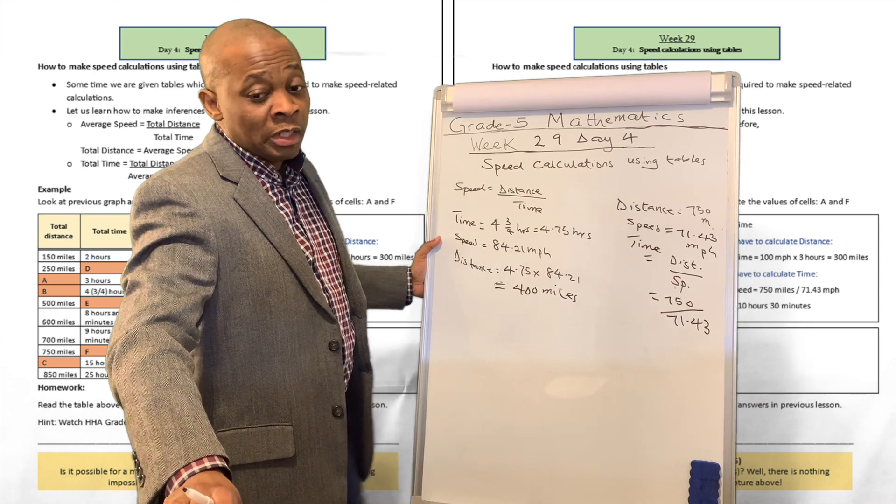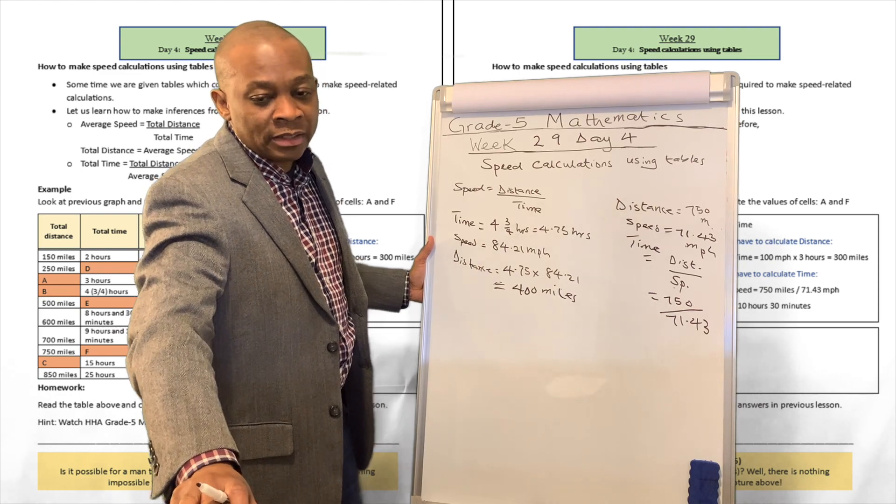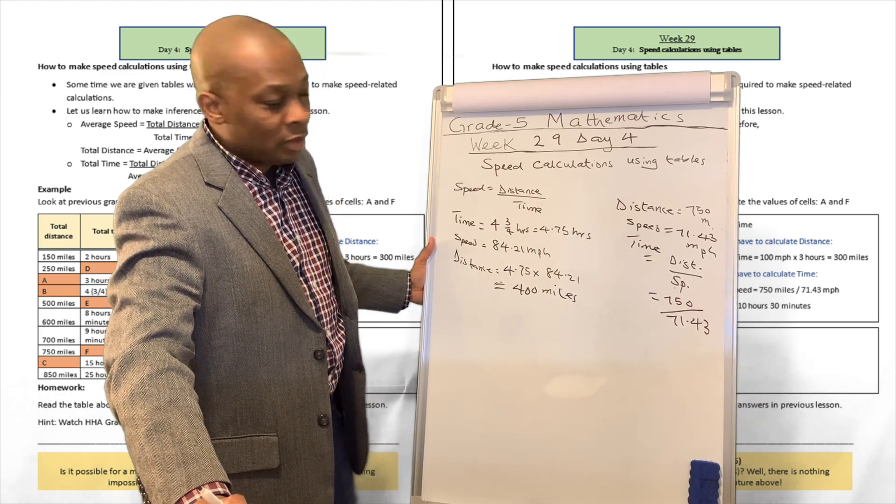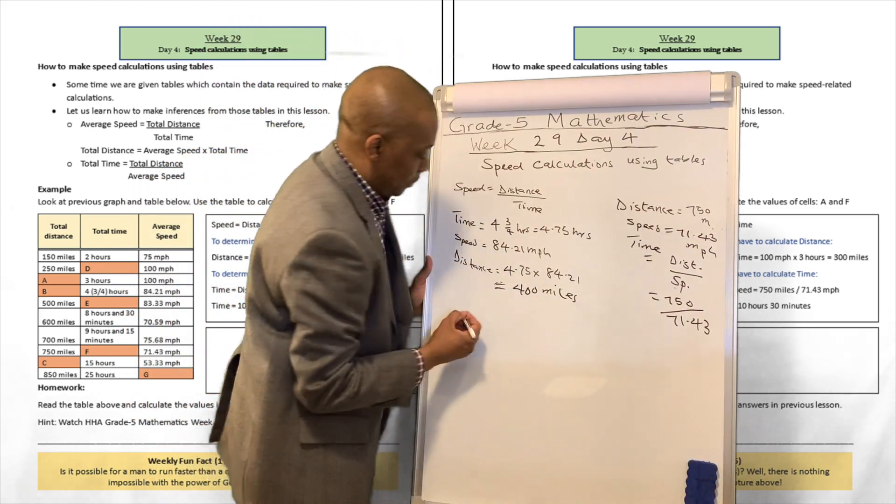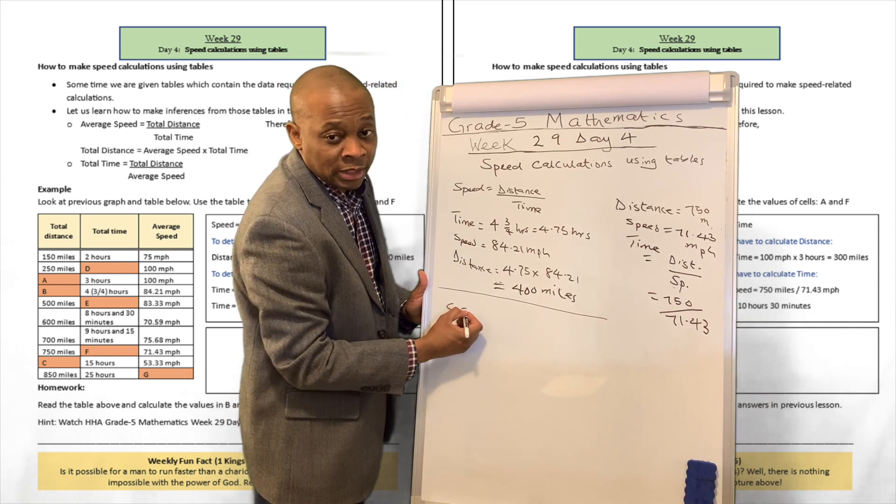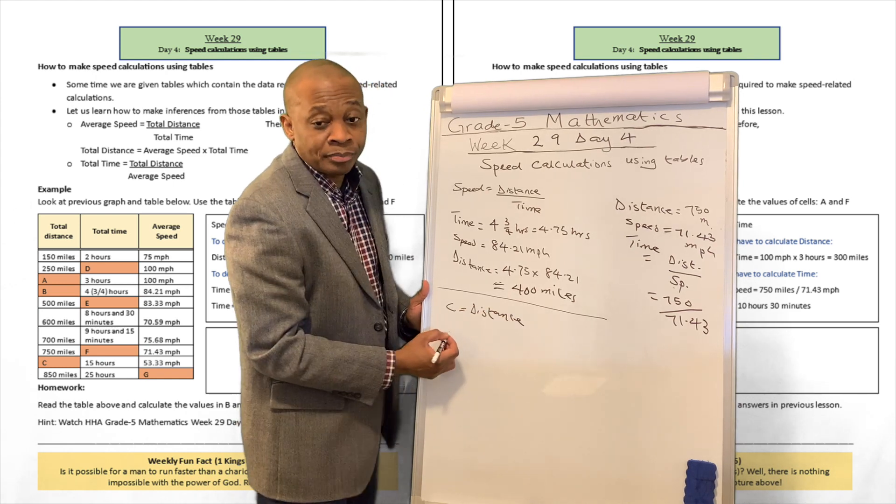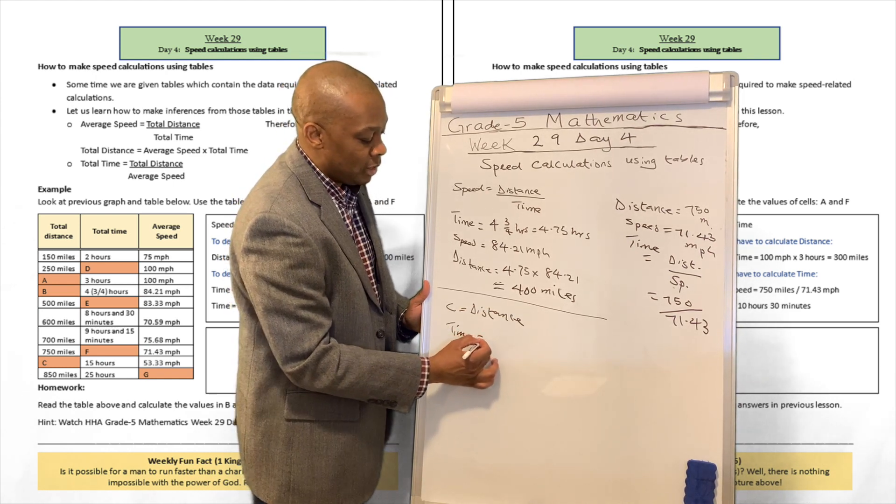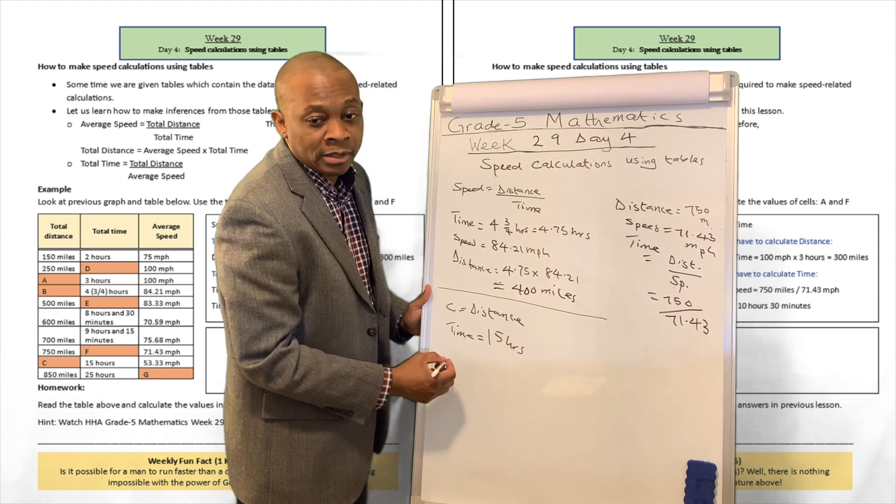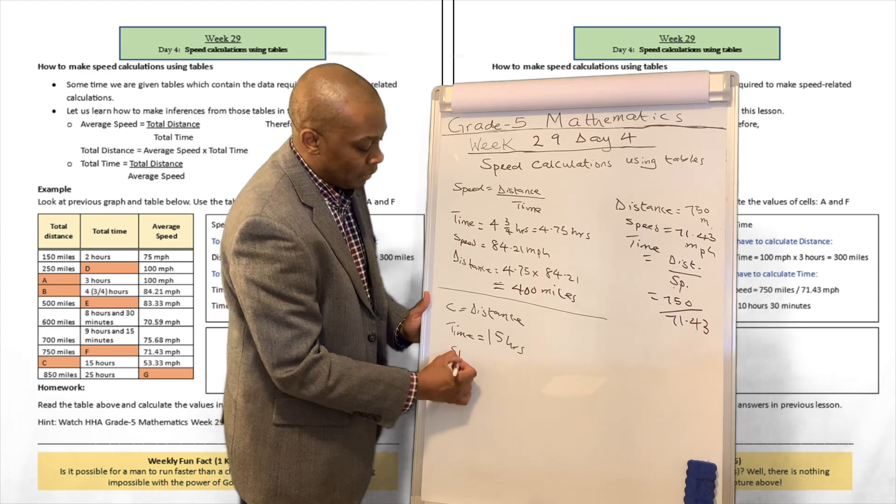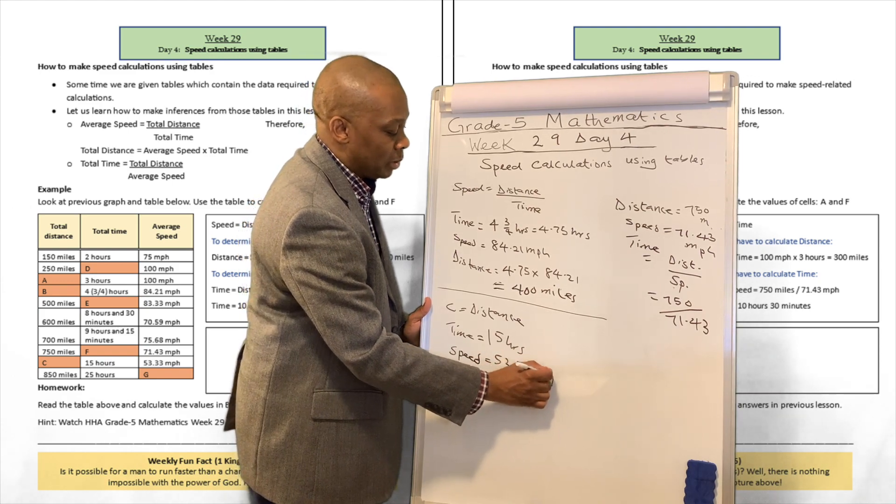Well, they want us to go ahead and prove the value of C as well. Now, to calculate C, we know that C is going to have to... To calculate C, which C is going to be distance, is currently unknown. Now, the time over there is going to be equivalent to 15 hours, all right? And then the speed is going to be 53.33. Speed is 53.33 miles per hour.